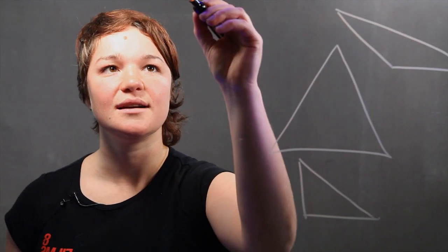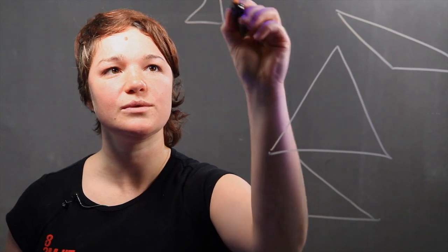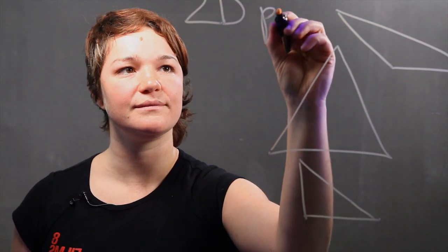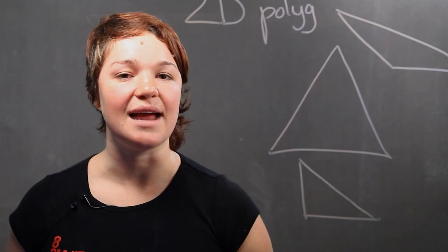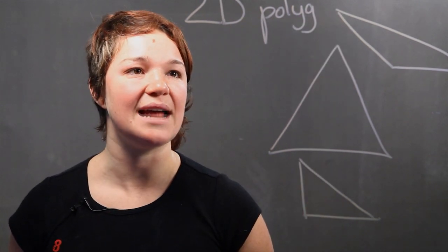Now, for starters, a triangle is a two-dimensional polygon. That means it has height and width, but it doesn't have any depth.